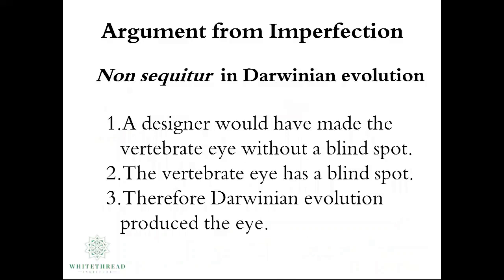The proponents of the argument from imperfection frequently use their psychological evaluations of the designer as positive evidence for undirected evolution. Their arguments for imperfection almost always follow a syllogism.